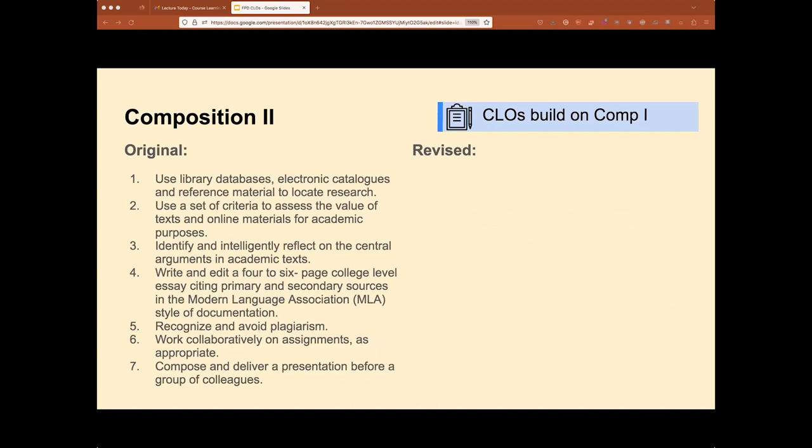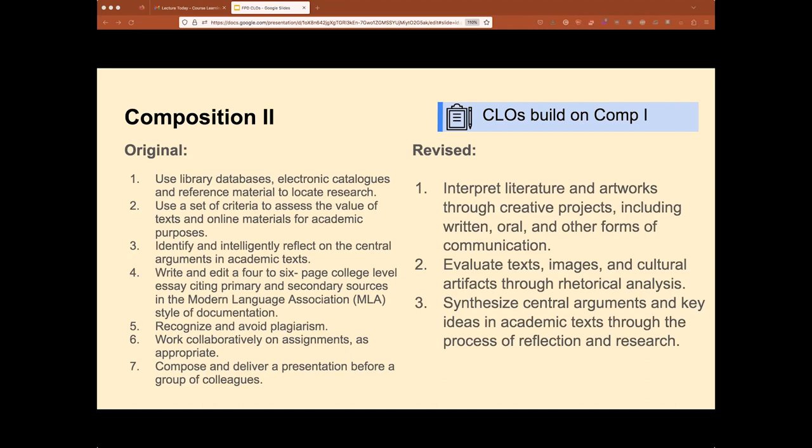For composition two, we wanted to begin to try to limit the number of course learning outcomes to three to five. You can see that composition two began with seven, so it was even more unwieldy. And we felt we could really narrow these down, especially because we were building on what we were already establishing in composition one. We were really thinking about this as what is the second half of that experience? What is the clear endpoint we're trying to reach with students when they complete these two courses together? That allowed us to actually focus on three CLOs for this course.